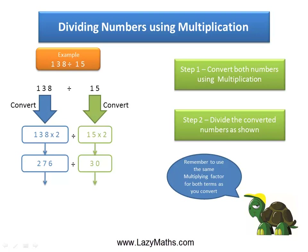276 divided by 30 can further be reduced to 92 divided by 10. And 92 divided by 10 is very easy to solve, because any number divided by 10, 100, or 1000 — you simply move the decimal point to the left by as many spaces as the number of zeros.